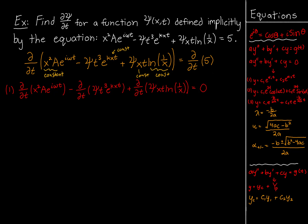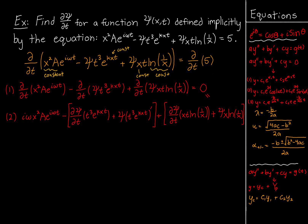We now take the partial derivatives of each term. For the first term, x squared a is constant, so we just take the derivative of e to the i omega t using the chain rule, bringing down i omega, giving x squared a times i omega times e to the i omega t. For the second term, we must apply the product rule twice: treating ψ as f and t cubed e to the kxt as g, so we get ∂ψ/∂t as f prime times g, plus f times g prime.